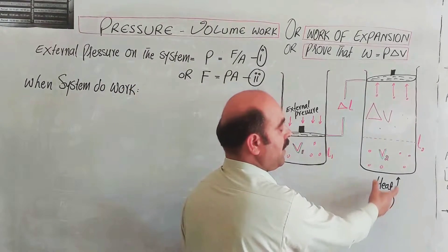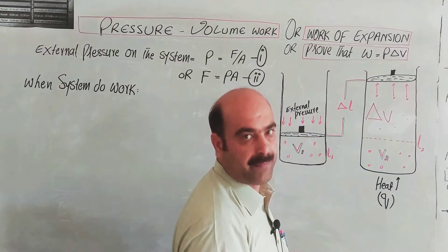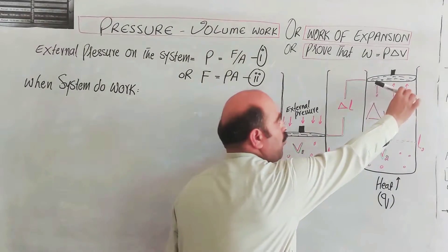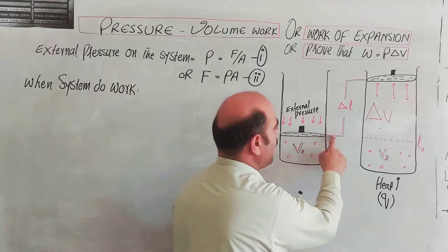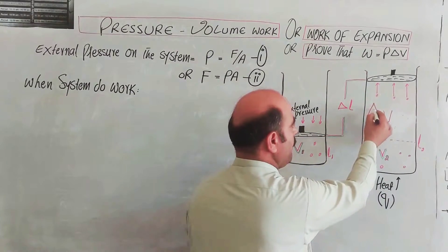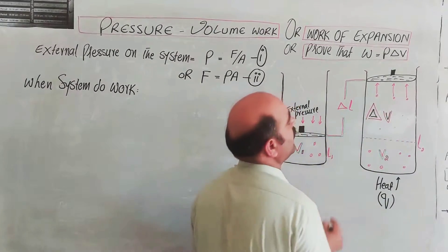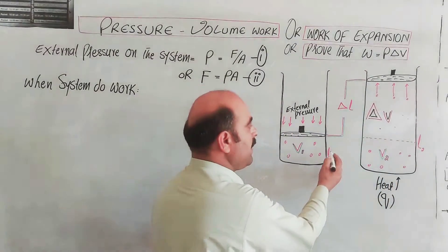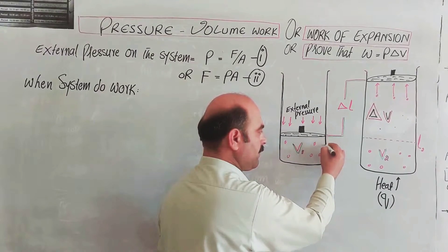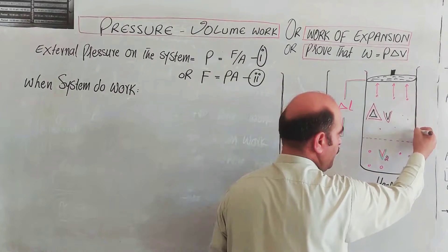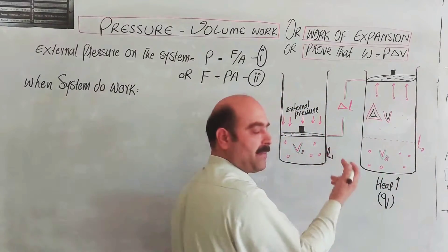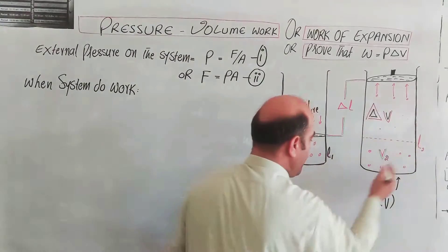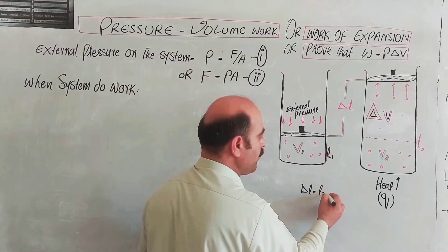When heat is supplied, the internal energy changes as delta E. The piston changes volume: initial volume V1, final volume V2. Change in volume is delta V, where delta V equals V2 minus V1. Similarly, the initial height is L1, the final height is L2. Change in length delta L equals L2 minus L1.